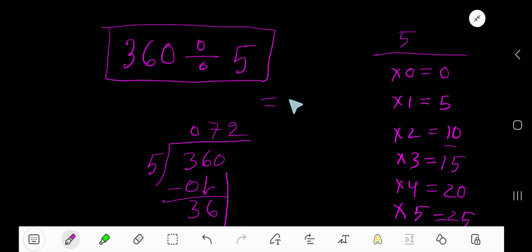That is, our answer is 72. This 0 doesn't have any value because it is in the left hand side of that digit, 7.